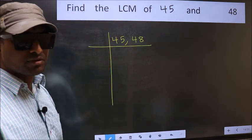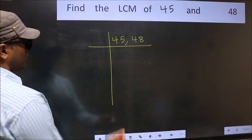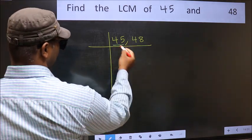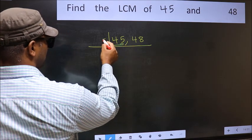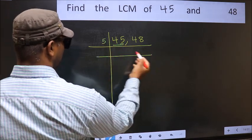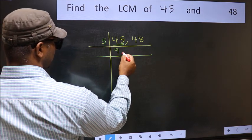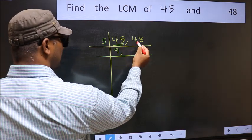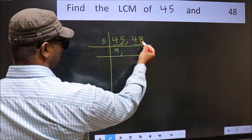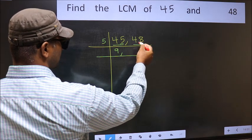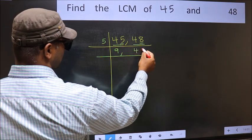Now we should focus on the first number which is 45. The last digit is 5, so take 5. When do we get 45 in the 5 table? 5 nines are 45. The other number 48 — the last digit is neither 0 nor 5, so this is not divisible by 5. So you write it down as it is.